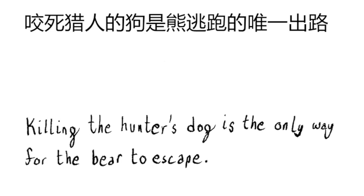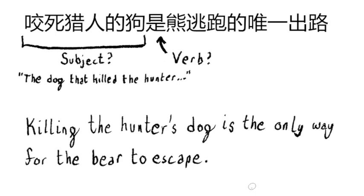This is a garden path sentence in Chinese. It is the only way for the bear to run away that killed the hunter's dog. The initial interpretation of it may be, 咬死猎人的狗, the dog that killed the hunter, is the subject, and we expect a verb next.